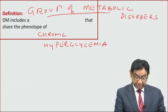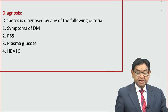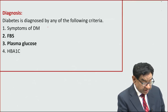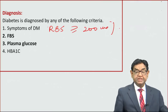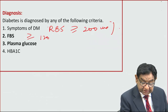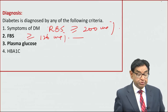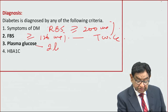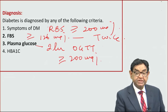It is a group of metabolic disorders. Now let's see how a patient comes to us and how we are going to diagnose this condition. A patient having symptoms of diabetes with a random blood sugar more than 200 mg% is diabetic, or fasting blood sugar more than 126 mg%. When talking about fasting blood sugar, it should be checked twice.